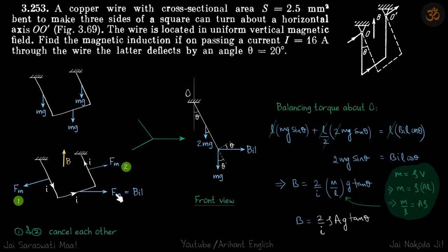The force F_m, whose value is BIl, acts on the bottom wire towards the right. Now we can balance torque about O: l × mg sin(θ) + (l/2) × 2mg sin(θ) = l × BIl cos(θ).